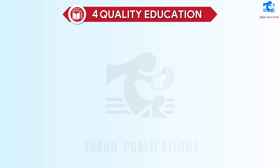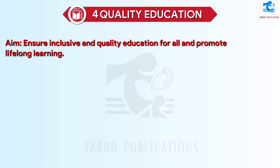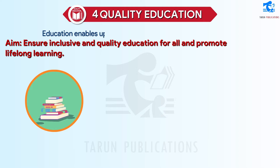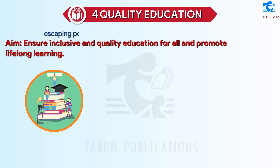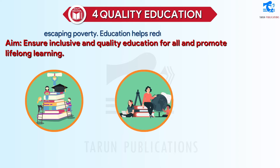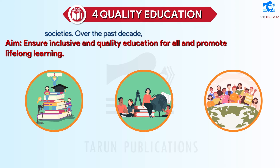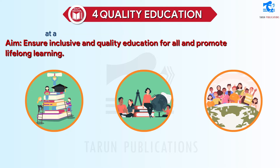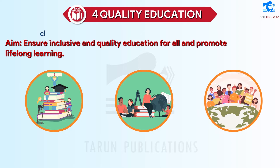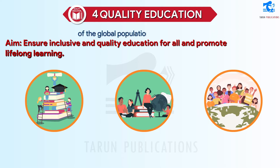SDG 4: Quality Education. Aim: ensure inclusive and quality education for all and promote lifelong learning. Education enables upward socioeconomic mobility and is a key to escaping poverty. It helps reduce inequalities and reach gender equality, and is crucial to fostering tolerance and more peaceful societies. Over the past decade, major progress has been made towards increasing access to education and school enrollment rates at all levels, particularly for girls. Nevertheless, about 258 million children and youth were still out of school in 2018, nearly one-fifth of the global population in that age group.